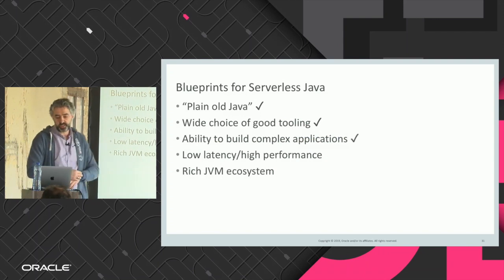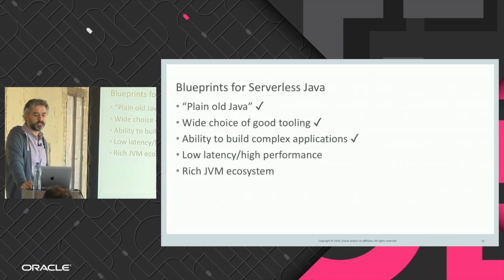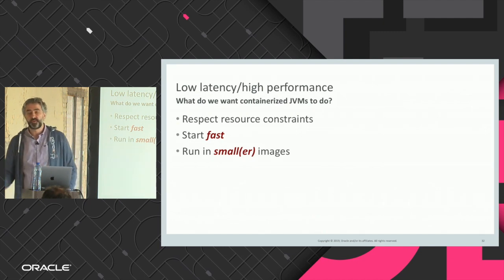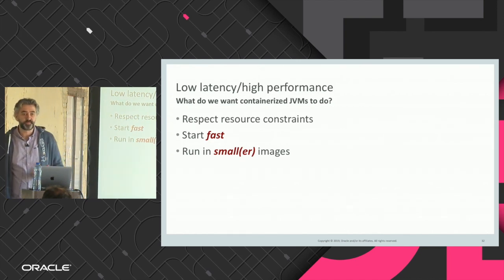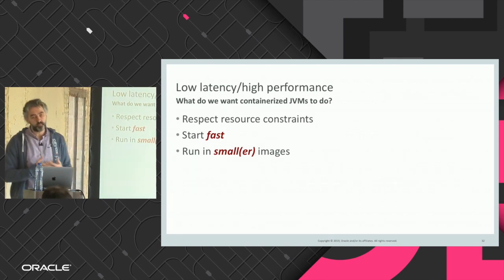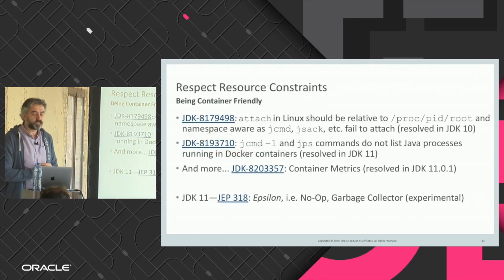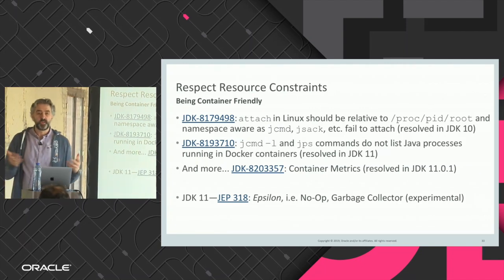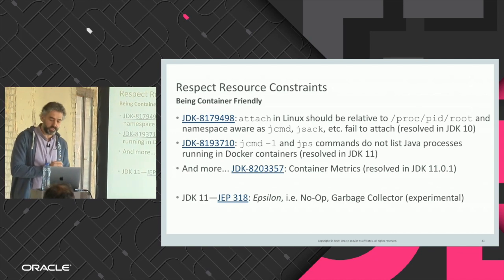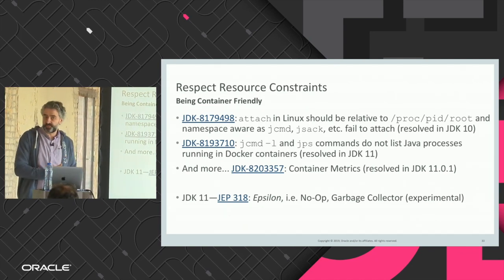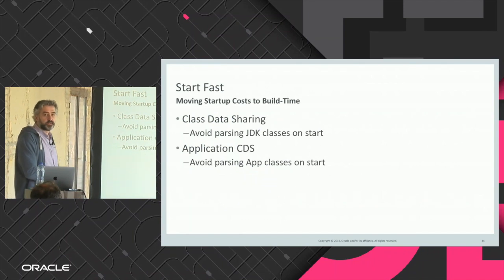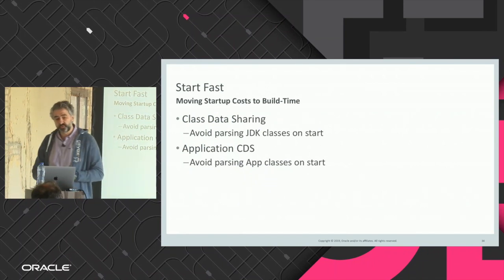You should only use the Flow API when you have function orchestration. The backend functions don't have to be written in Java — I used Python, Ruby, and Node. Now let's talk about low latency and high performance. Whenever we invoke a serverless Java function in a container, we want it to start as quickly as possible. With each OpenJDK release comes enhancements specific to running the JVM within containers, which is important.